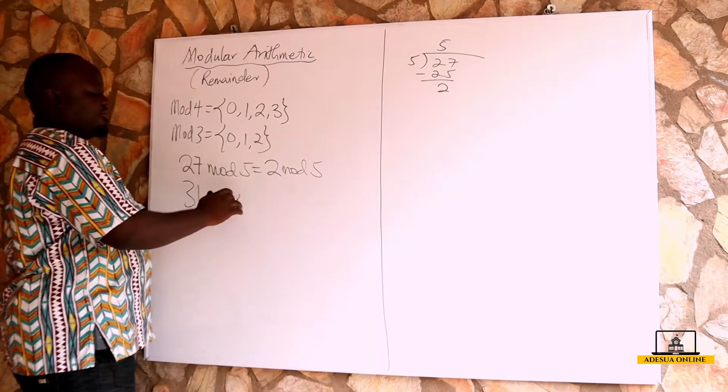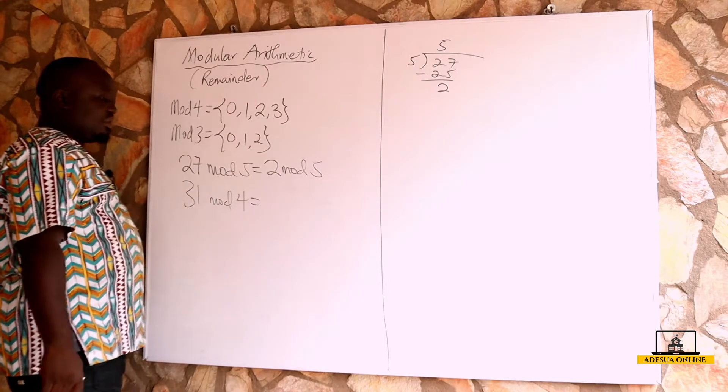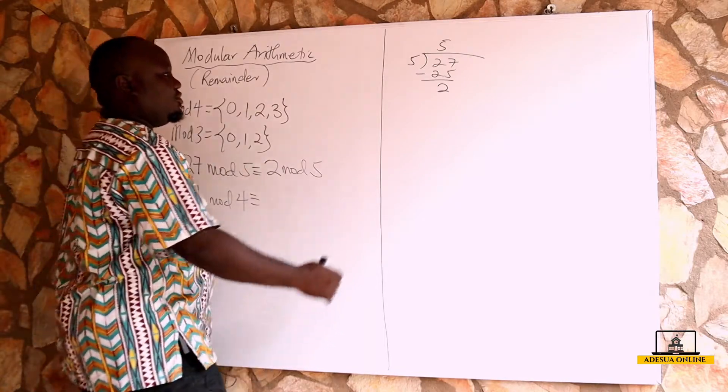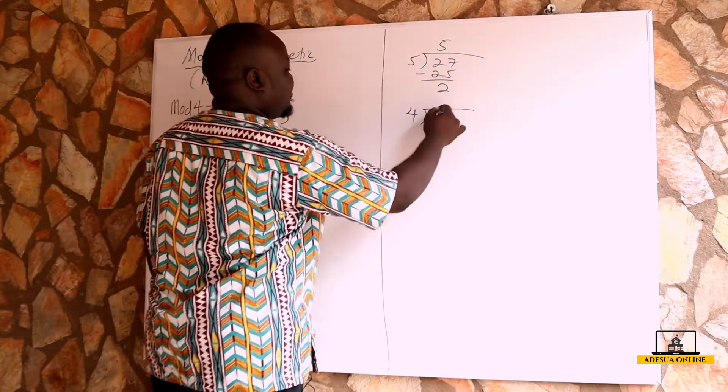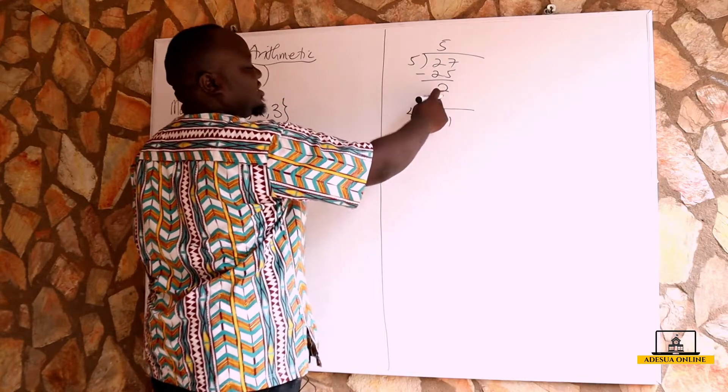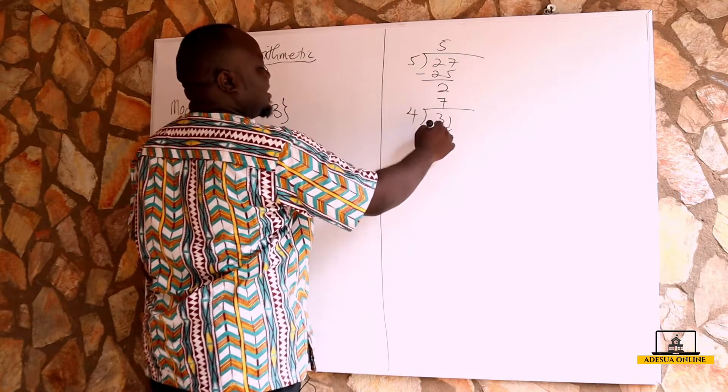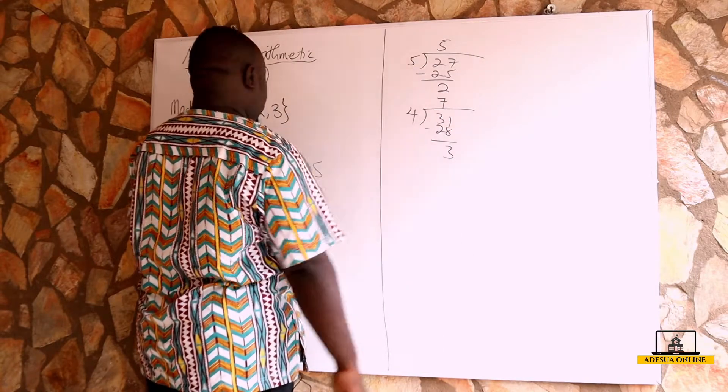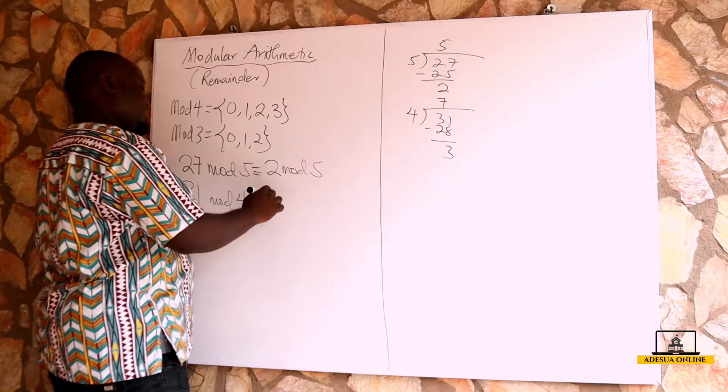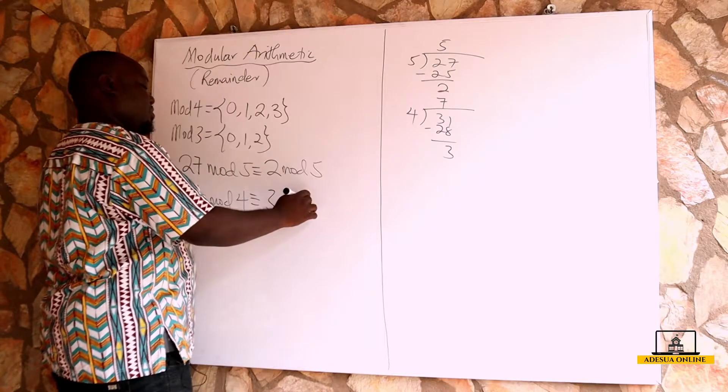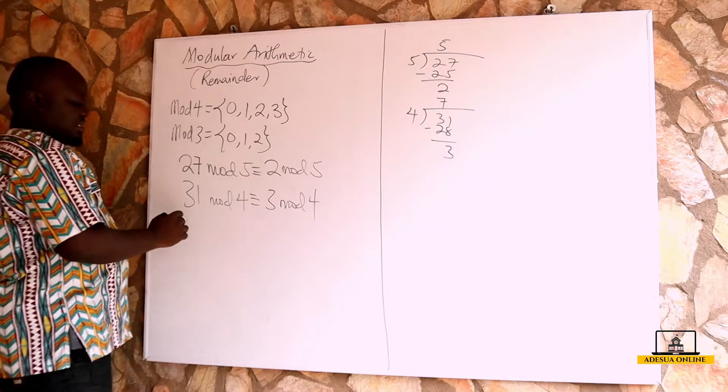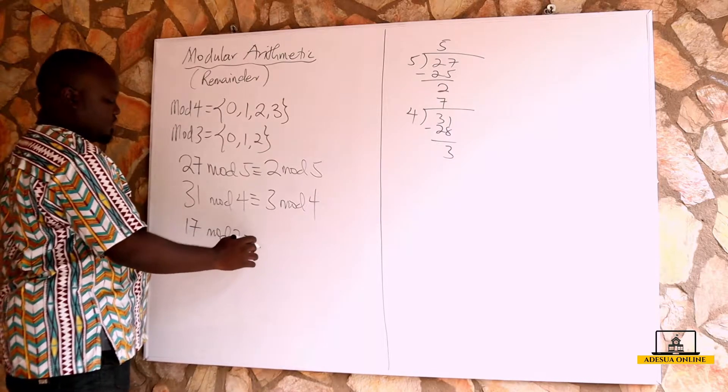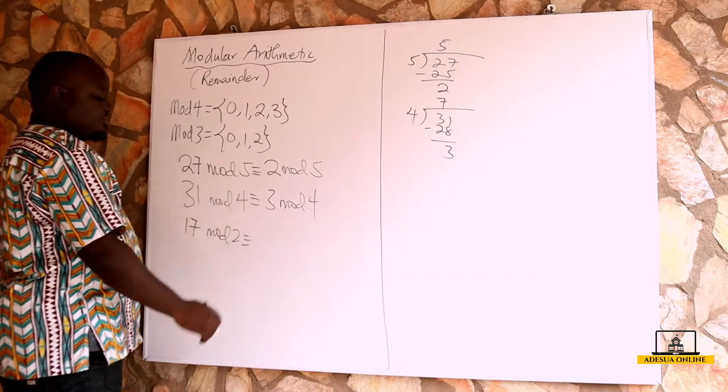Another example can be, let's say we have 31 modulo 4. If we divide 31 by 4, we do the division: 4 times 7 is 28, so 31 minus 28 will give us 3. This will give us 3 mod 4. Another example can be 17 mod 2.